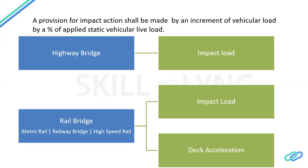But in case of a railway bridge, there is another component in addition to the impact load — that is deck acceleration. Why we want to consider deck acceleration is because the rail bridge is running over a rail track. Since it is running, it will be subjected to some vibration — deck vibration due to this impact load. The passenger inside should be comfortable because they should not be subjected to this vibration. So there is a limit in the code so that deck acceleration should be limited to that value. Also, since the rail is running on the track, it should not dislodge from the track, so the deck should not accelerate too much.